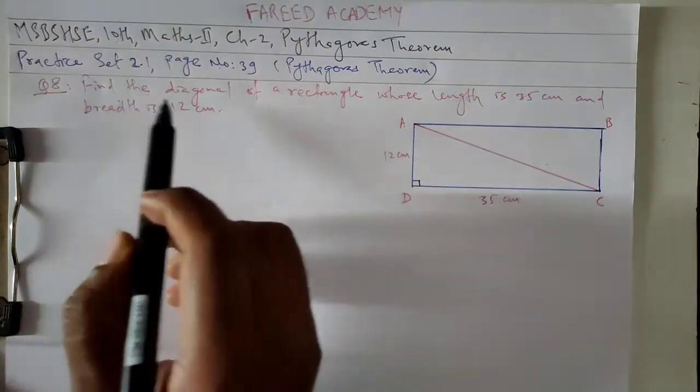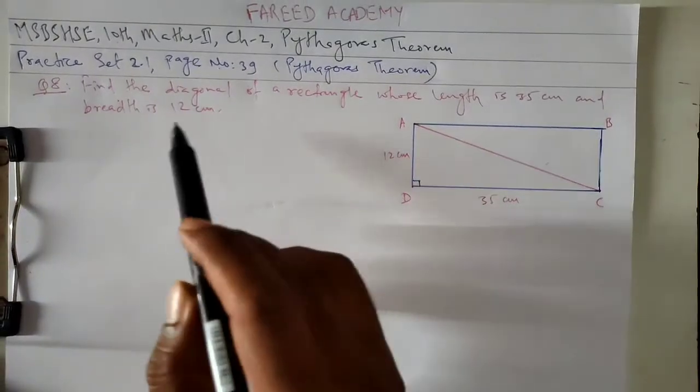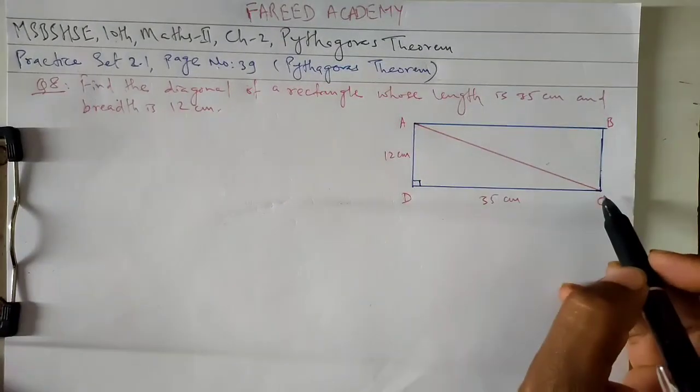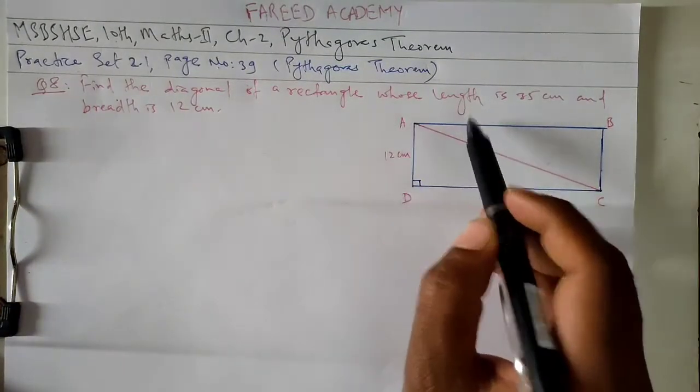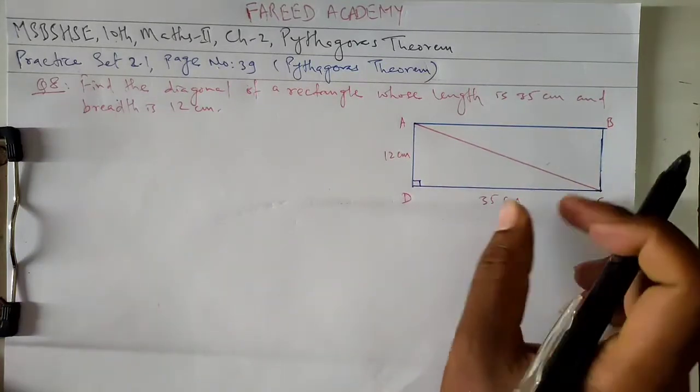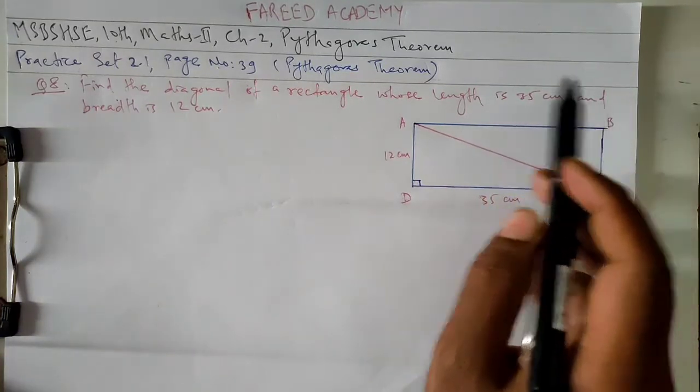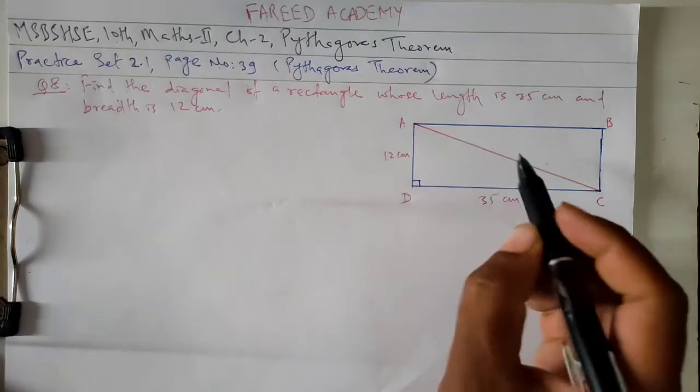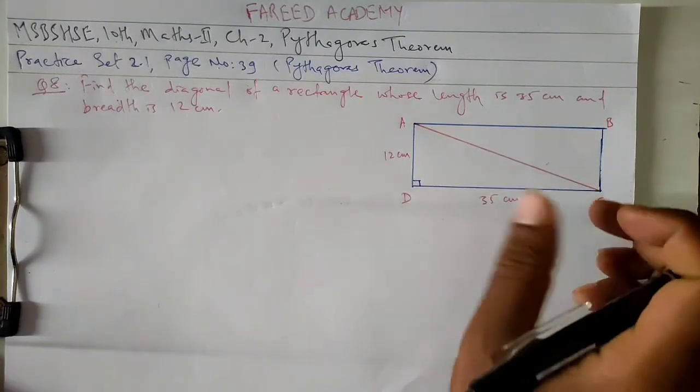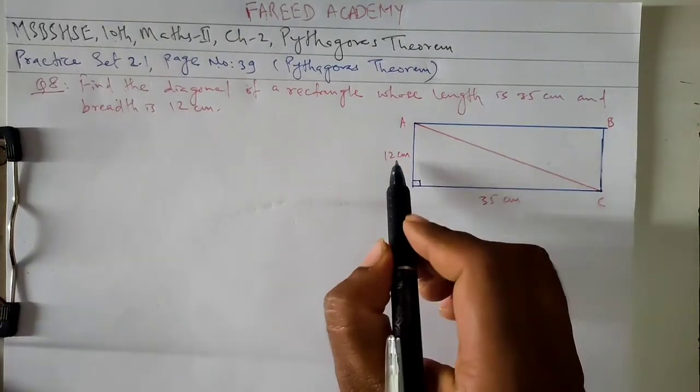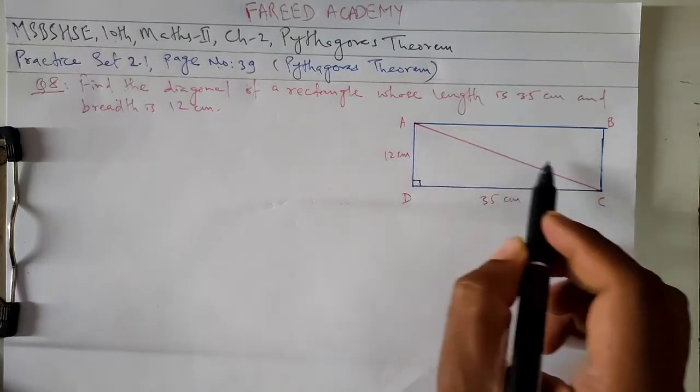I will read the question: Find the diagonal of a rectangle whose length is 35 cm and breadth is 12 cm. A rectangle where the length is 35 cm and breadth is 12 cm, we need to find the diagonal.